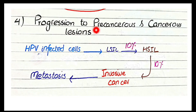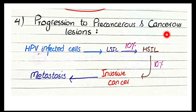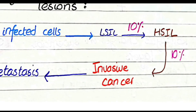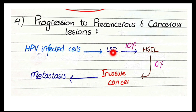The next important step is the progression of these HPV-infected proliferating cells to precancerous and cancerous lesions. The infected cells begin to proliferate rapidly, and rapid proliferation increases the chance of genetic aberrations. Some of these infected cells transform into low-grade squamous intraepithelial lesion (LSIL), some progress to high-grade squamous intraepithelial lesion (HSIL), and if untreated, HSIL ultimately results in invasive cancer, which can metastasize.